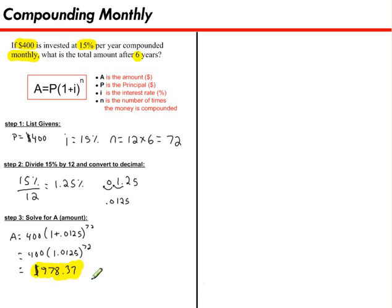So this investment started off with $400, and after six years, it's grown to almost $1,000. $978.37.